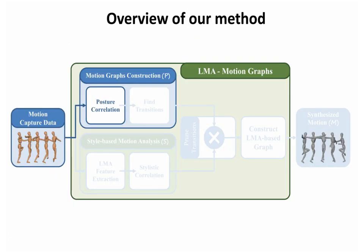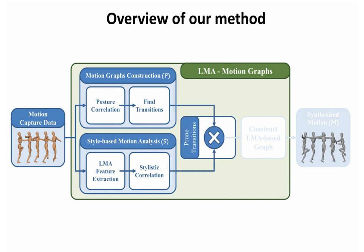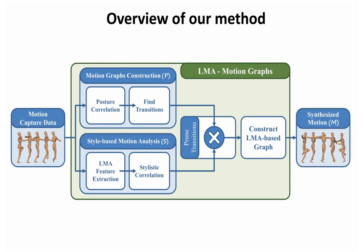The system is then divided into two independent processes. The first process computes posture correlations between motion clips and constructs a motion graph, in which nodes represent transition frames between clips and edges represent motion transitions. The second process encodes both the movement's quantitative and qualitative characteristics based on principles drawn from Laban movement analysis. Our algorithm extracts LMA features and measures motion similarity by computing their Pearson correlation coefficient. Finally, these LMA correlations are used to prune transitions of the motion graph that are not stylistically coherent, leading to an LMA-based motion graph that can be used to synthesize plausible dance animations.